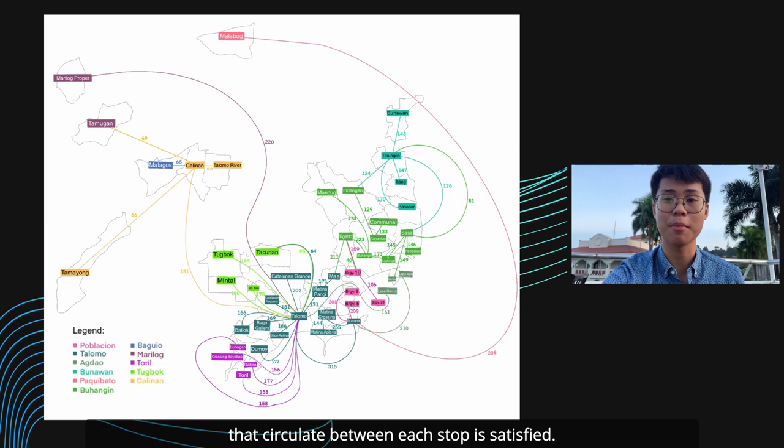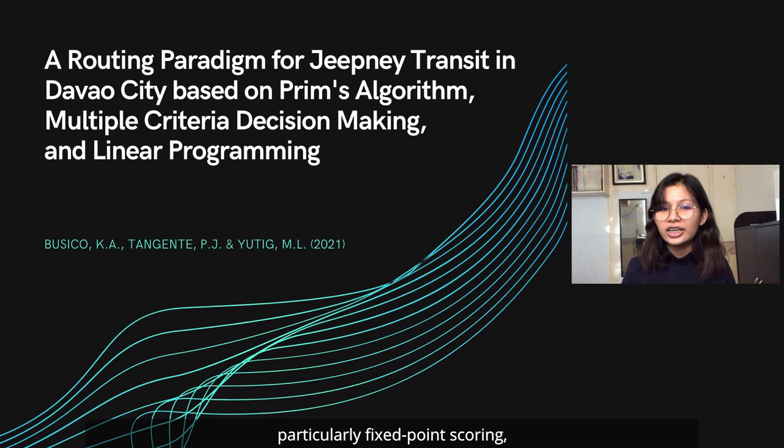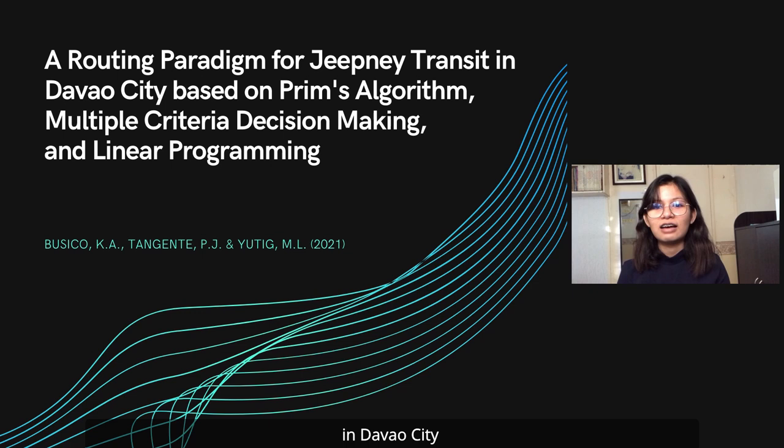The study demonstrates how multiple-criteria decision-making, particularly fixed-point scoring, can be integrated with graph theory and linear programming to improve the efficiency of public transportation in Davao City and potentially in other developing cities.